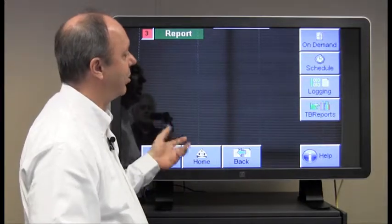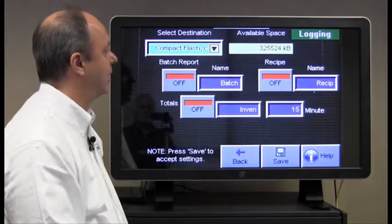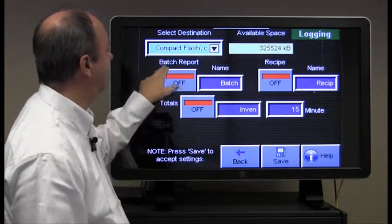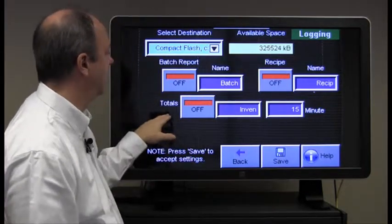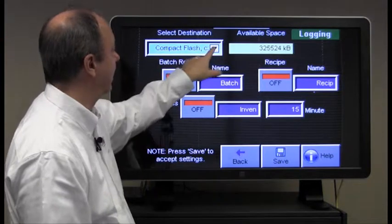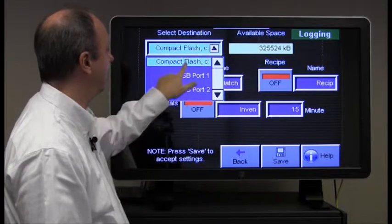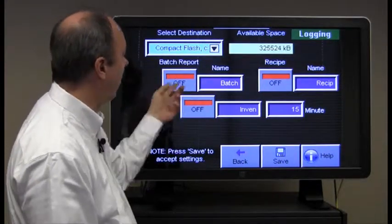So that's scheduled reporting. The next way of reporting totals is by logging. The system allows us to log batch information, recipe total information, and the inventory totals to any one of these destinations. The compact flash on the system or a USB port. And you simply just turn these off or on.